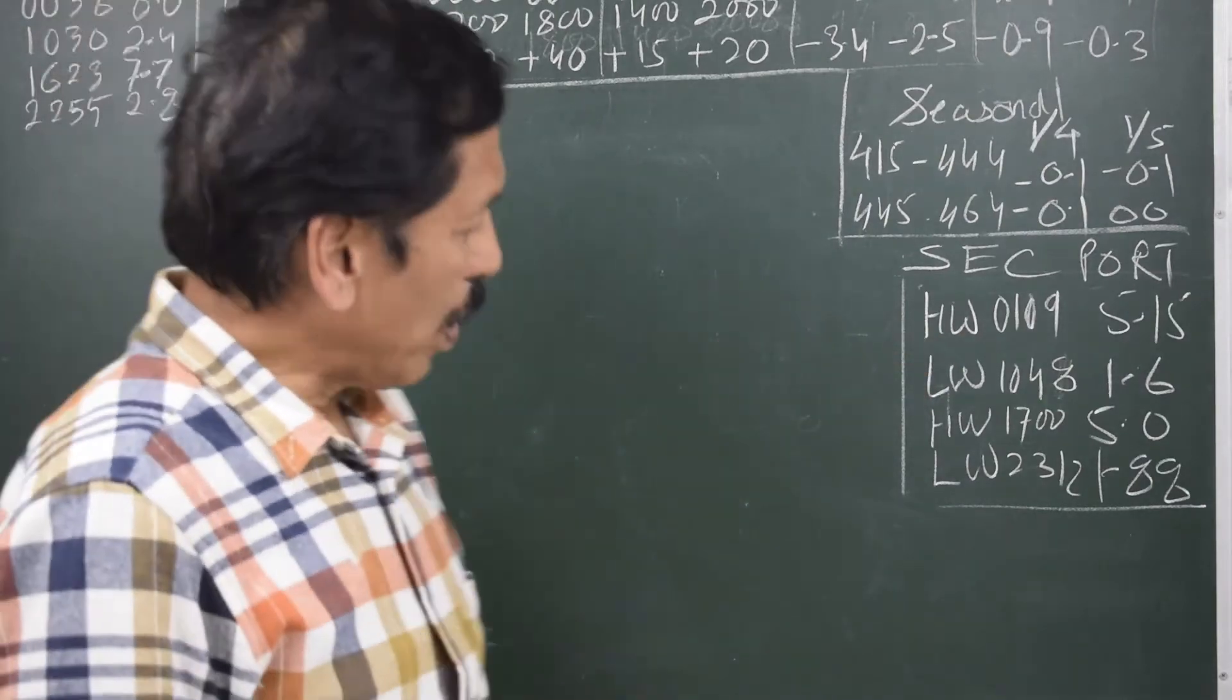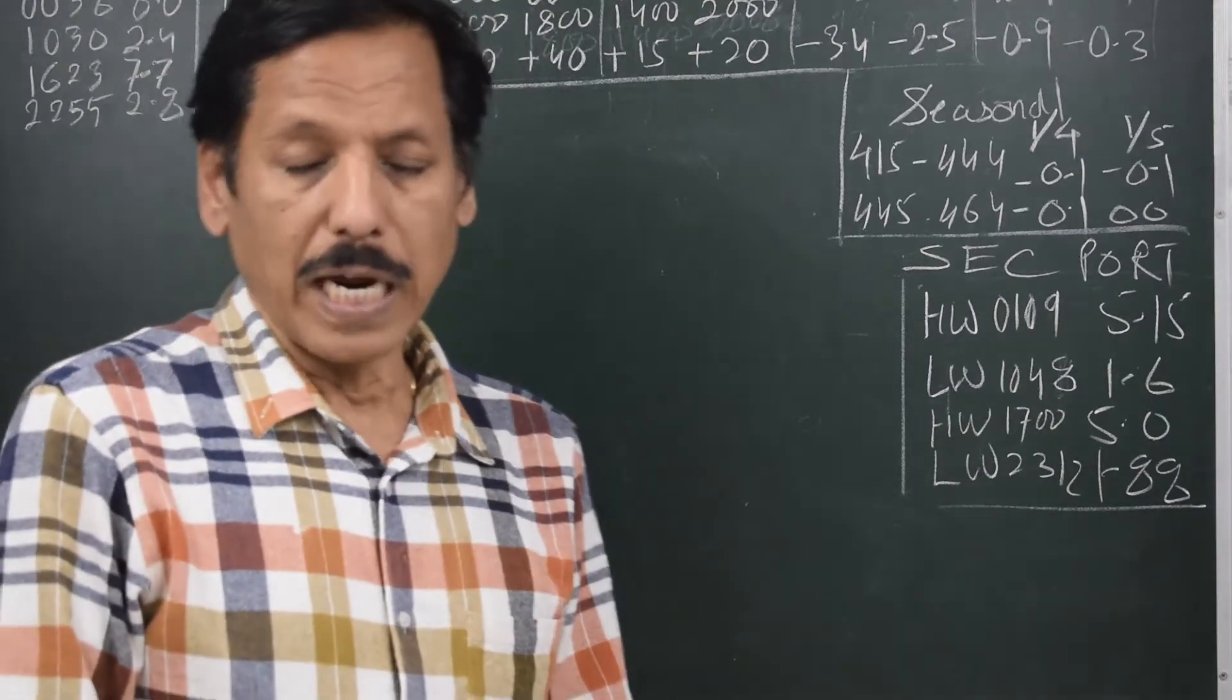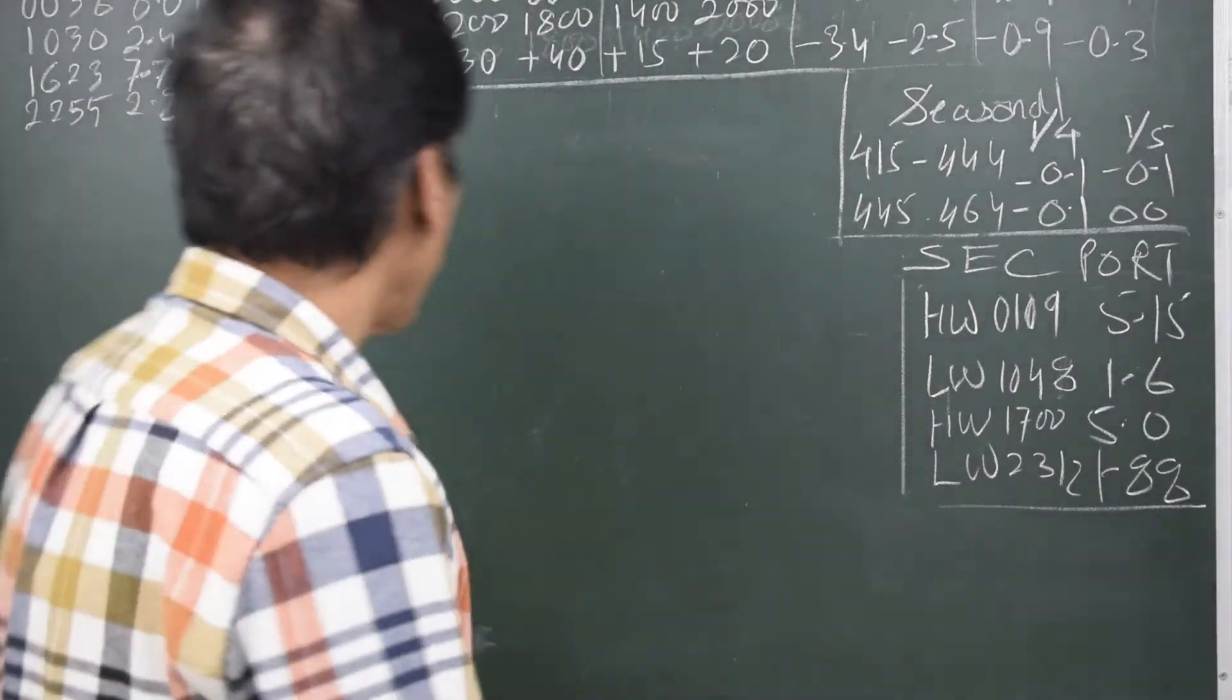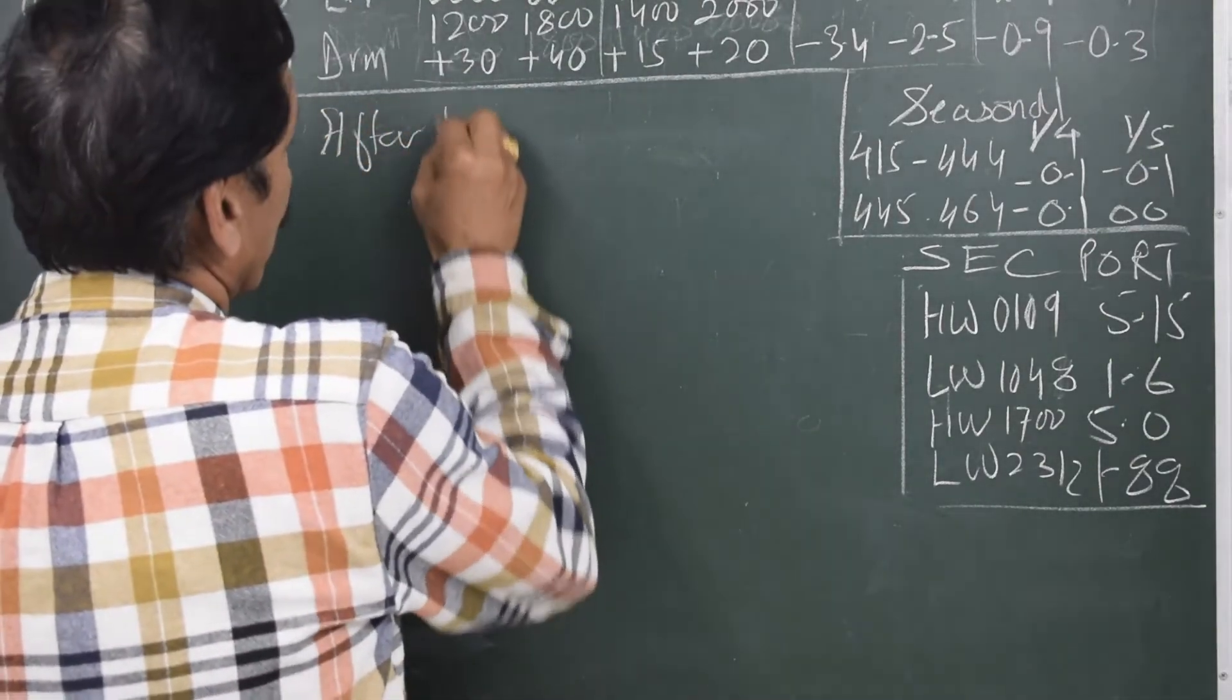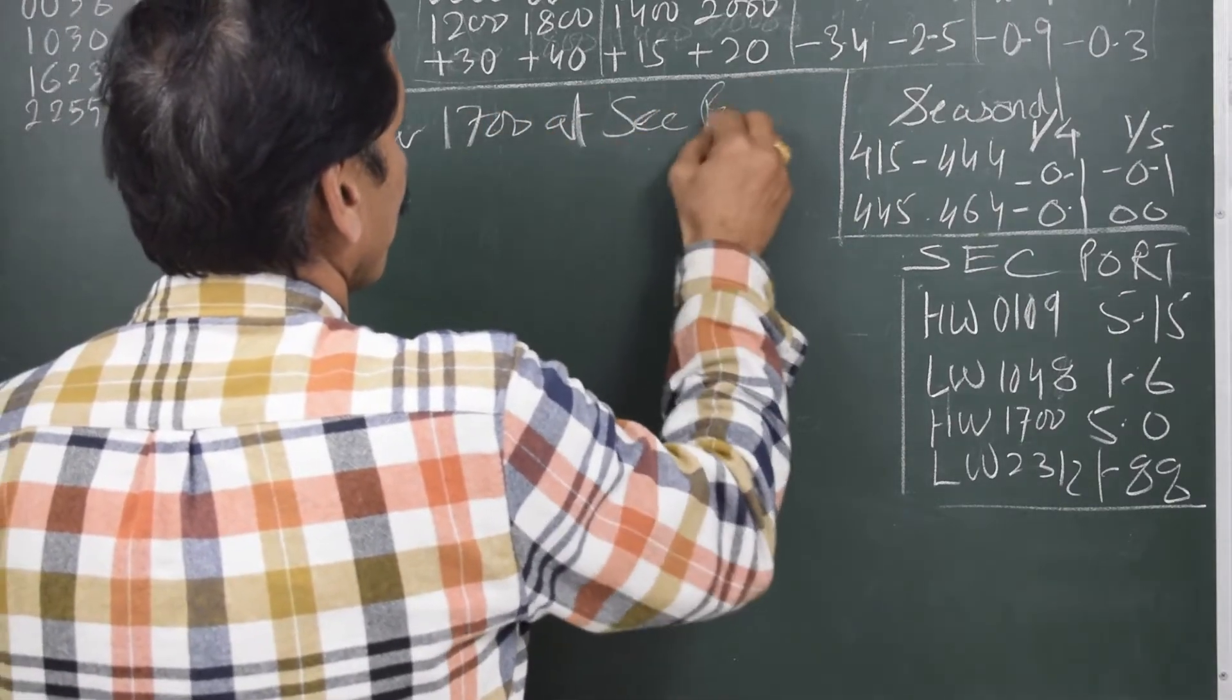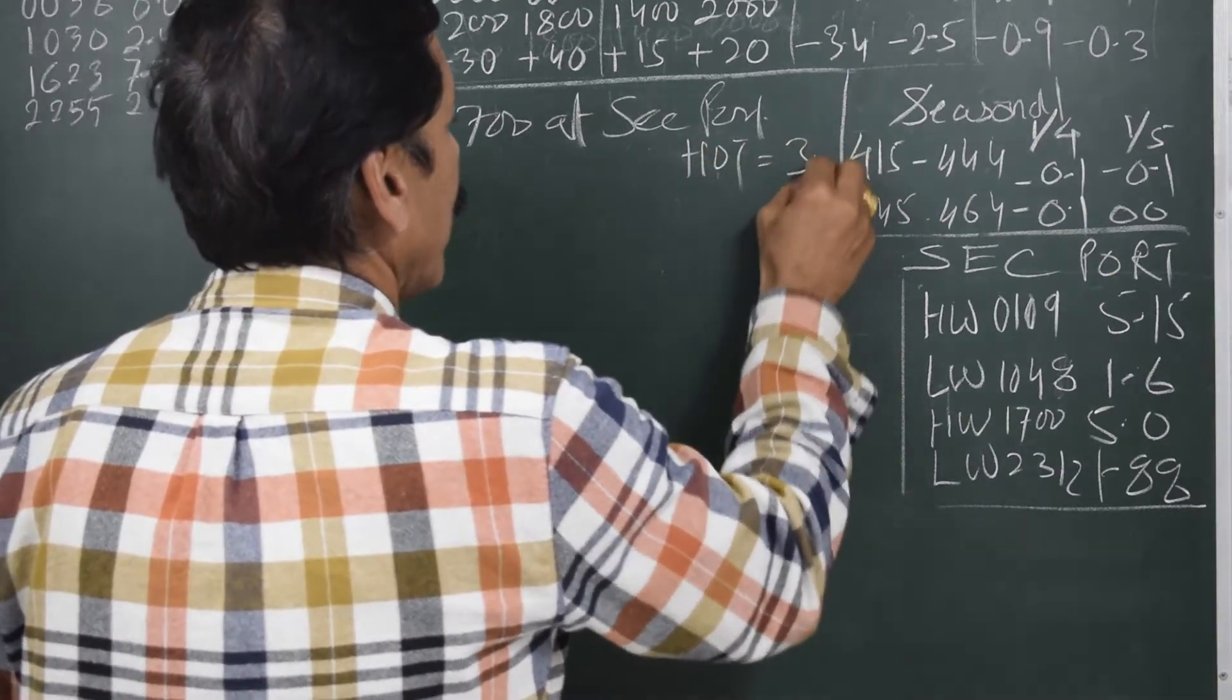For example, after 1700 hours in the evening, when will the height of tide be 3 meters? For some reason we want to find out that after 1700 at secondary port when the height of tide will be 3 meters.